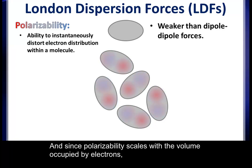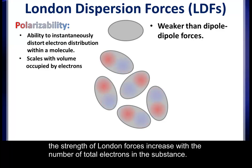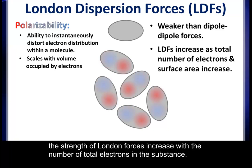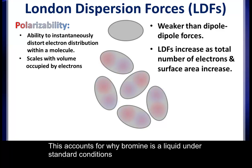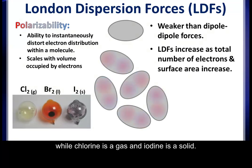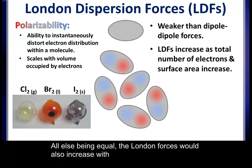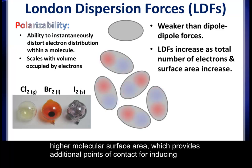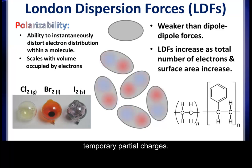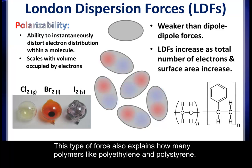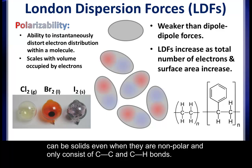Because the total partial charges generated in these fleeting interactions are small, London forces are typically the weakest intermolecular force. Since polarizability scales with the volume occupied by electrons, the strength of London forces increases with the total number of electrons in the substance. This accounts for why bromine is a liquid under standard conditions, while chlorine is a gas and iodine is a solid. London forces also increase with higher molecular surface area, which provides additional points of contact for inducing temporary partial charges. This also explains how many polymers, like polyethylene or polystyrene, can exist as solids even when they are nonpolar and consist only of carbon-carbon and carbon-hydrogen bonds.